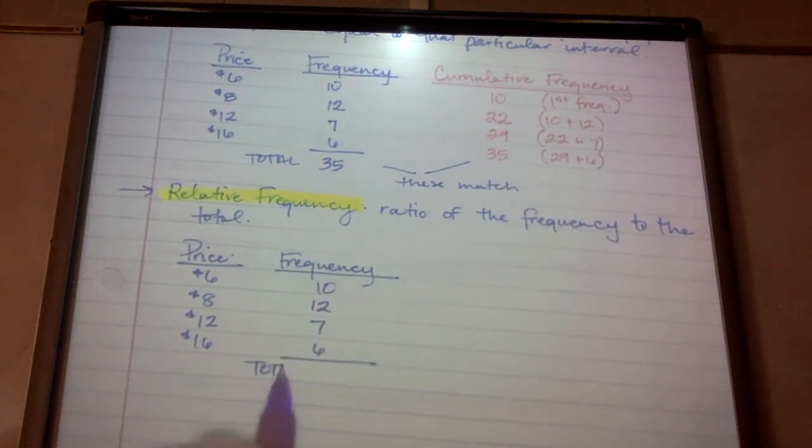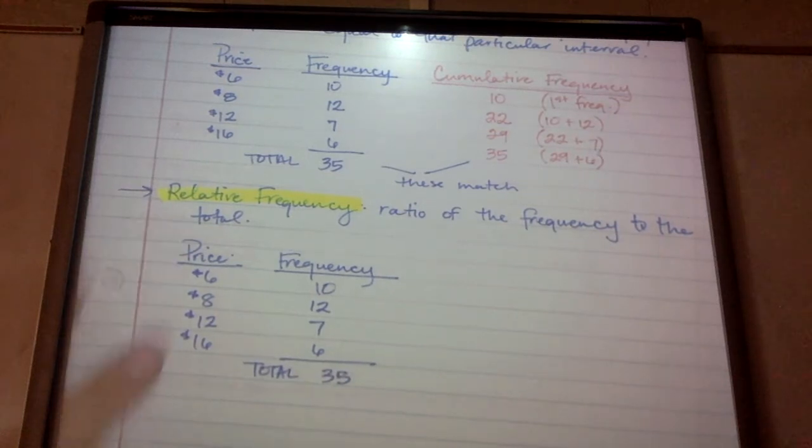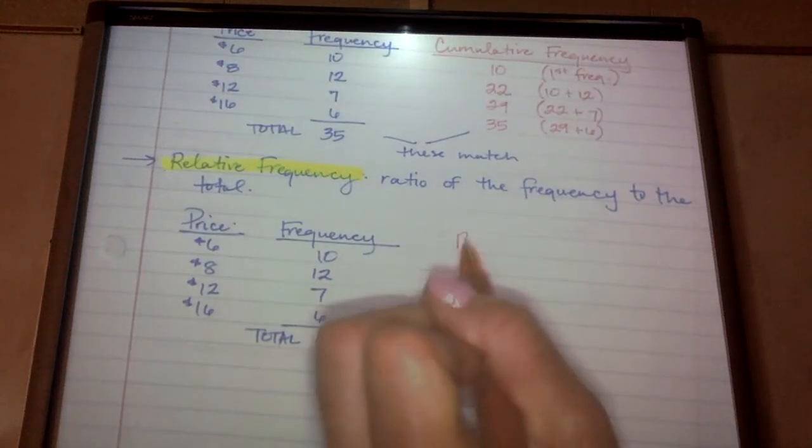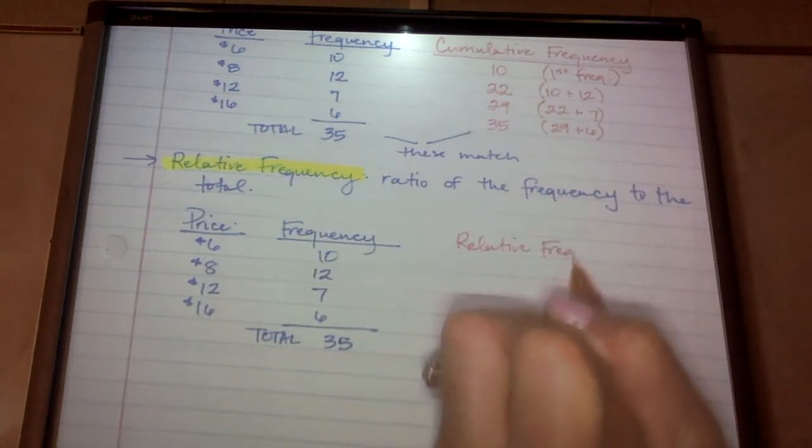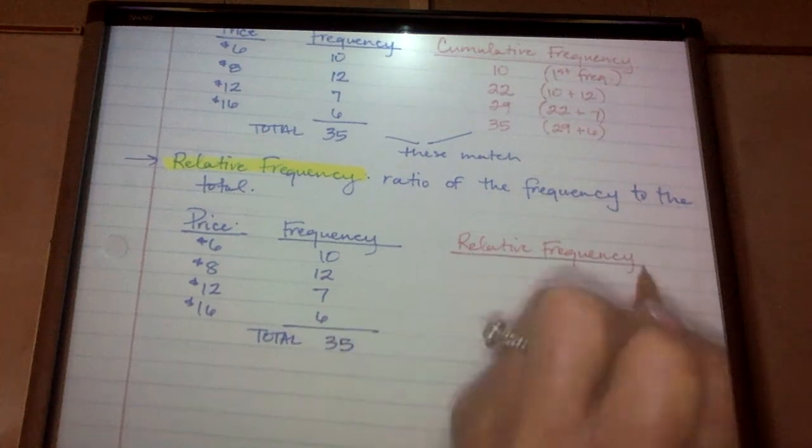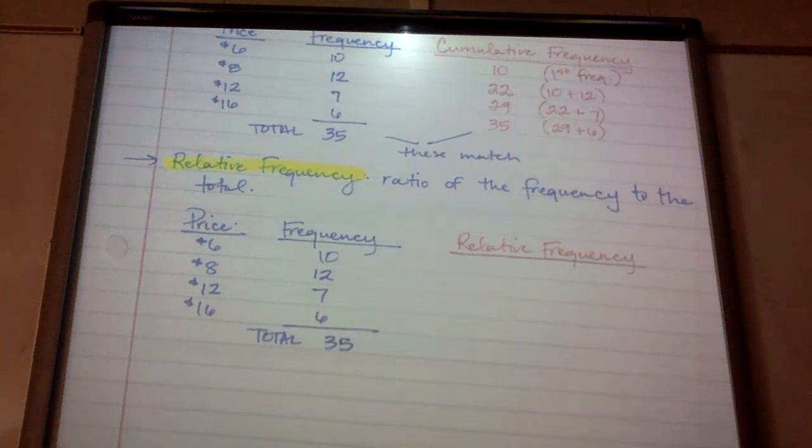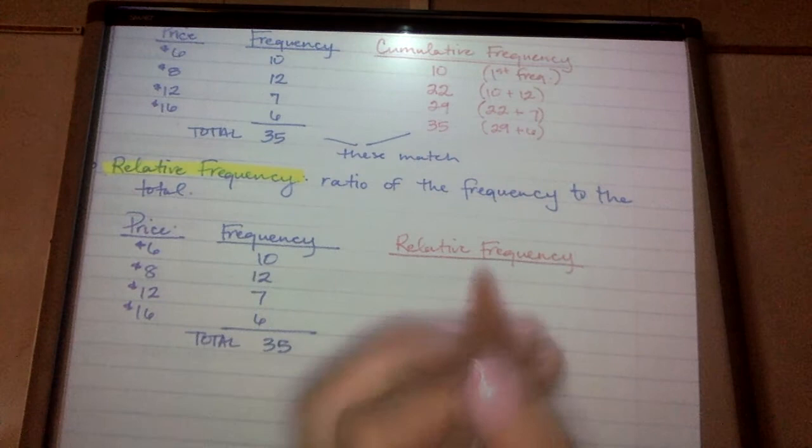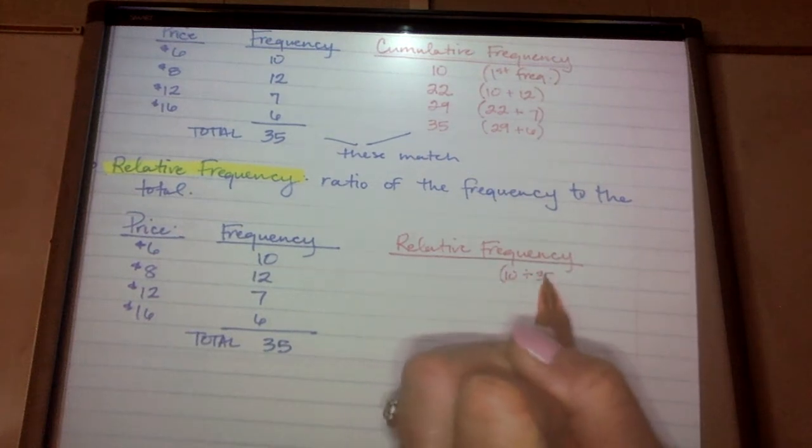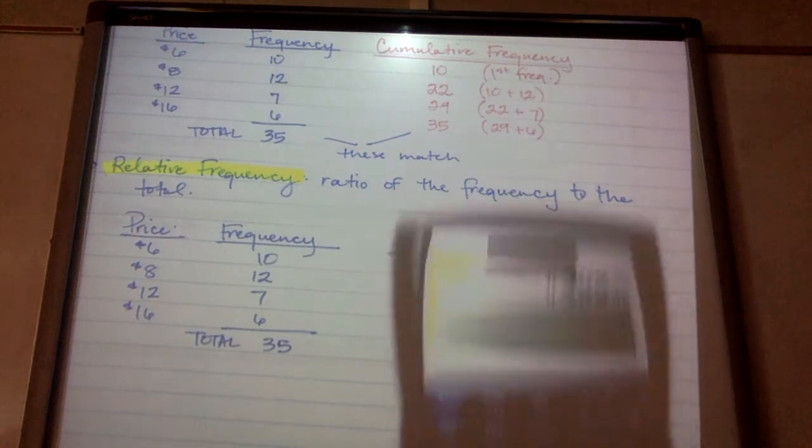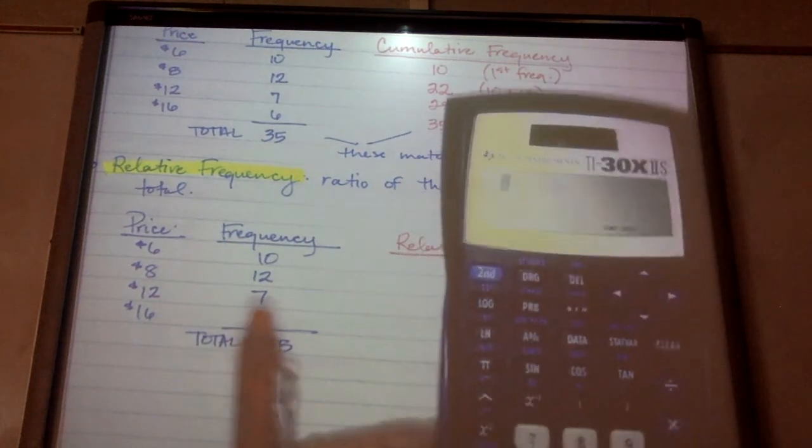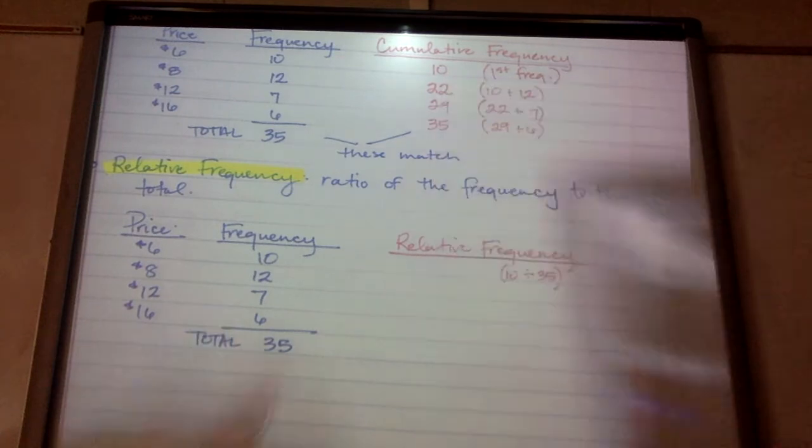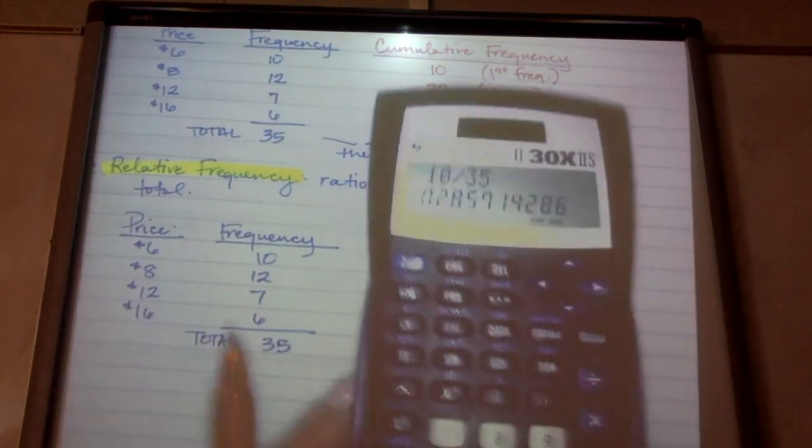Frequency is the number of people who purchased it, or how many times $6 occurred. So 10, 12, 7, 6. Remember, if I add all of these up, like in context, if these were plants, 35 plants were purchased. So this new one, relative frequency, is a ratio. It's totally different from the last one, but it is a ratio of the current interval to the total. So for example, this first one, I would be taking 10 and dividing it by the total of 35. So using my calculator, 10 divided by 35, 0.285. So I'm going to round to the nearest thousandth, and I'll put that above.